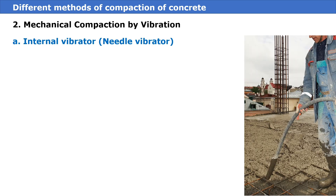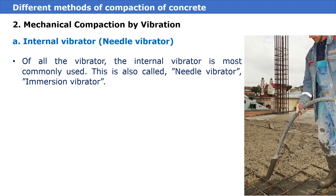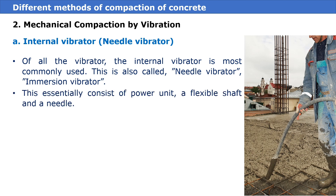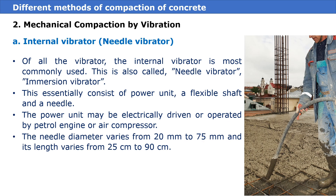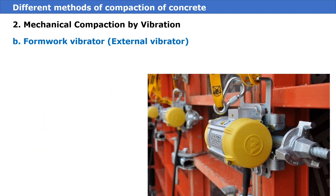The second method of compaction is mechanical compaction by vibration. First is the internal vibrator, also known as the needle vibrator. Of all the vibrators, the internal vibrator is most commonly used. It is also called the needle vibrator or immersion vibrator, and essentially consists of a power unit, a flexible shaft, and a needle. The power unit may be electrically driven or operated by petrol engine or air compressor. The needle diameter varies from 20 mm to 75 mm and its length varies from 25 cm to 90 cm.